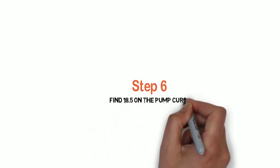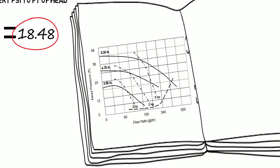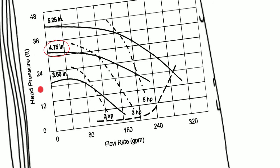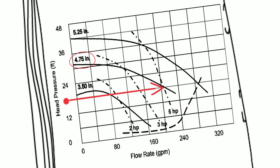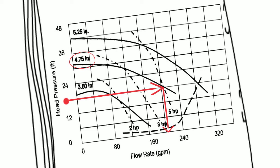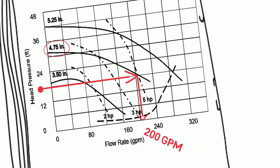Step 6: Find 18.5 on the pump curve. On the left-hand side of the chart we have head pressure in feet, going from 0 to 48, and at the bottom we have flow rate. Find 18.5 — it's right between 12 and 24, see the red dot. Draw an arrow across to the curve for our 4.75-inch impeller, then draw an arrow down to GPM. Right between 160 and 240, that is about 200 GPM. This pump is moving 200 gallons per minute of water. That was easy.